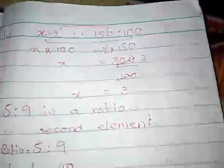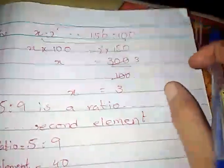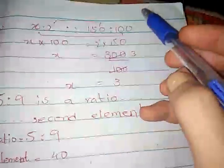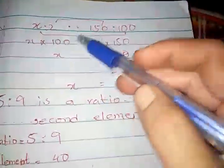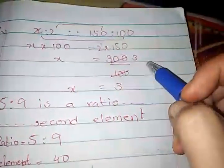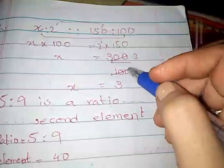Number 3 is X ratio 2 proportion 150 ratio 100. 2 multiplied by 150 equals 300, and since 100 cannot be multiplied with X, 300 is divided by 100. The value of X is 3.